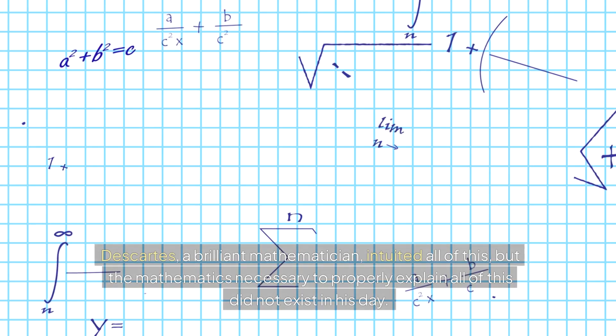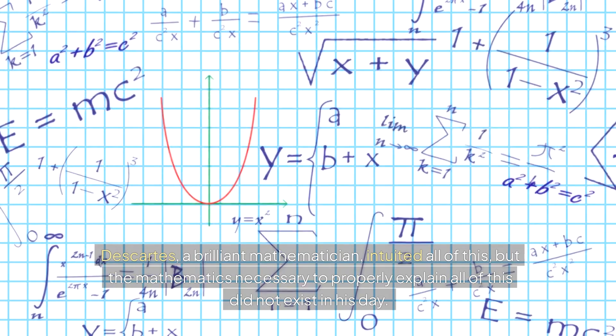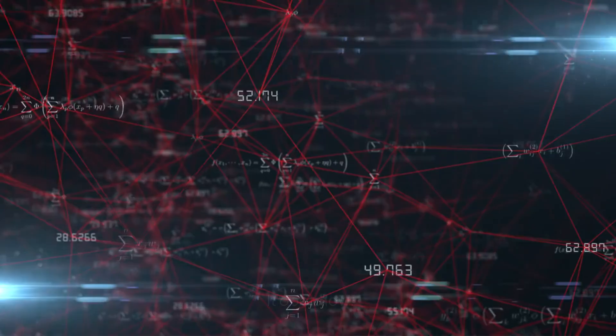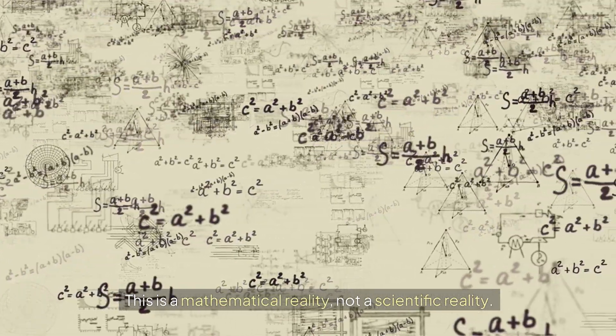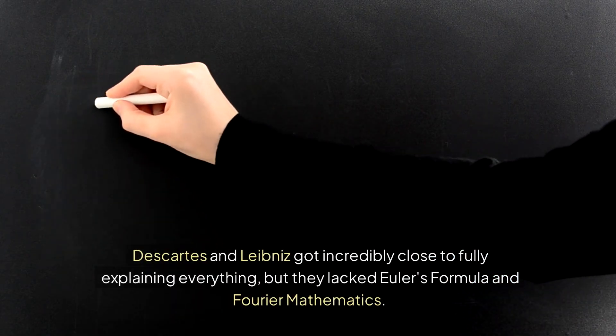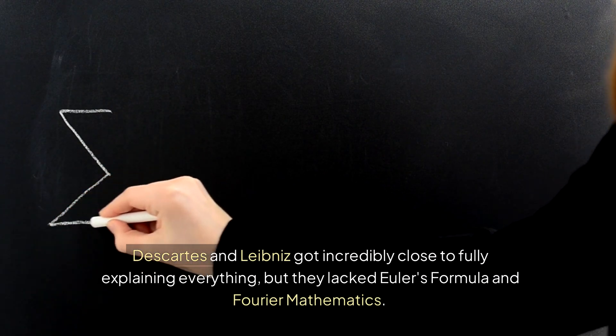Descartes, a brilliant mathematician, intuited all of this, but the mathematics necessary to properly explain all of this did not exist in his day. It does now. This is a mathematical reality, not a scientific reality. Descartes and Leibniz got incredibly close to fully explaining everything, but they lacked Euler's formula and Fourier mathematics.